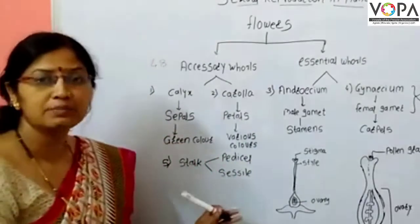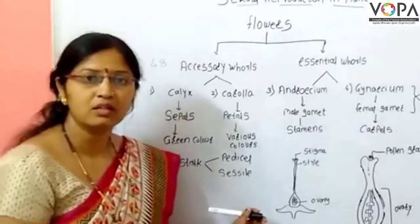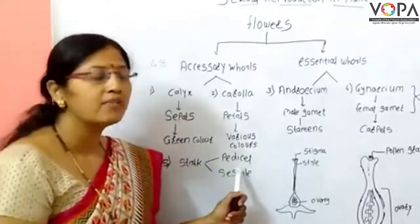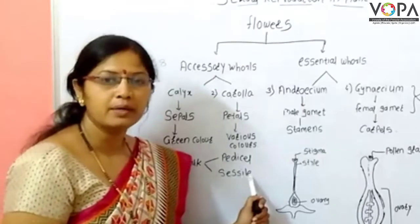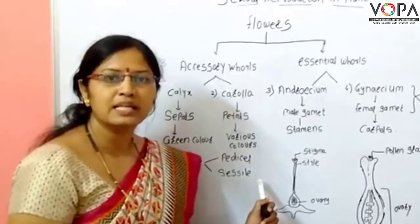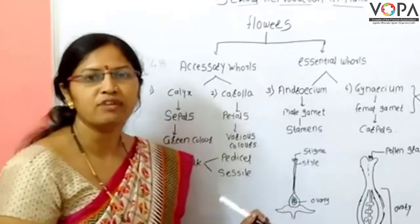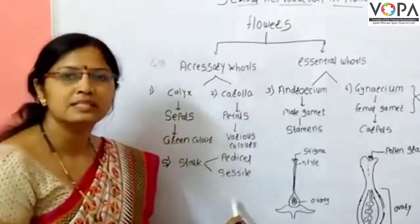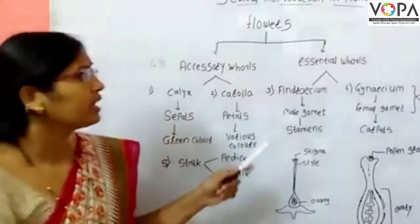A flower that has a pedicel is called a pedicellate flower, and a flower that does not have a pedicel is called a sessile flower.